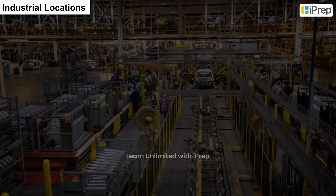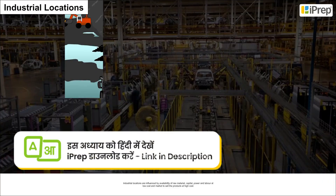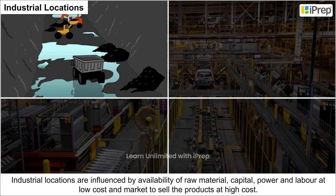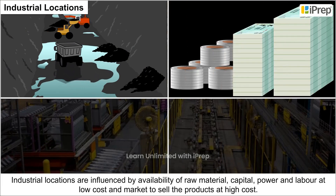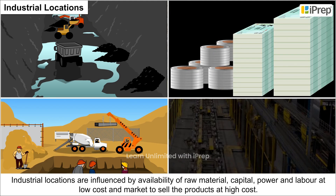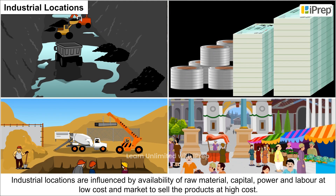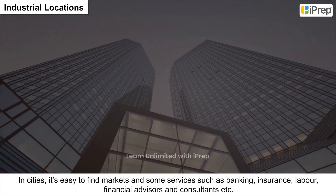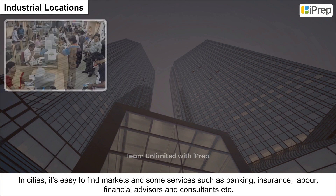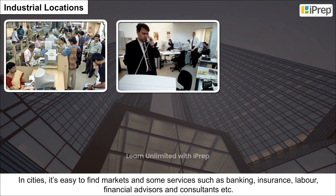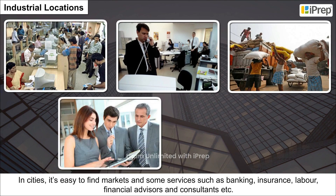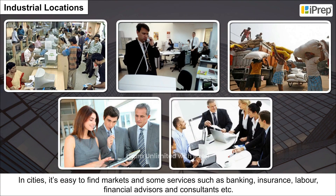Industrial locations are influenced by the availability of raw materials, capital, power, and labor at low cost, and markets to sell products at high cost. In cities, it is easy to find markets and services such as banking, insurance, labor, financial advisors, and consultants.